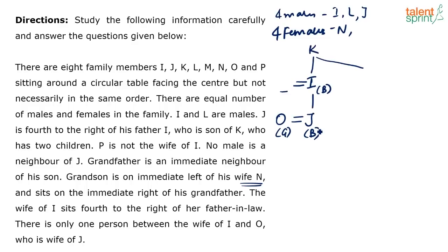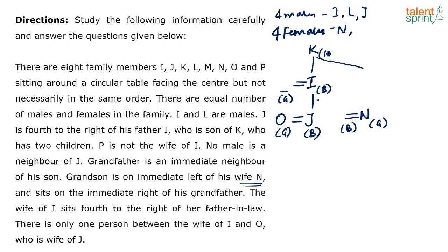Looking at the generations: K is the grandparent generation, I is the 2nd generation, and J/L are the 3rd generation. No information about a grandmother is given, and there are exactly 4 males. So the grandparent must be male — K is the grandfather. I've now identified 3 girls: N, O, and one more. That means the grandparent slot must be male and the remaining unknown must be female.